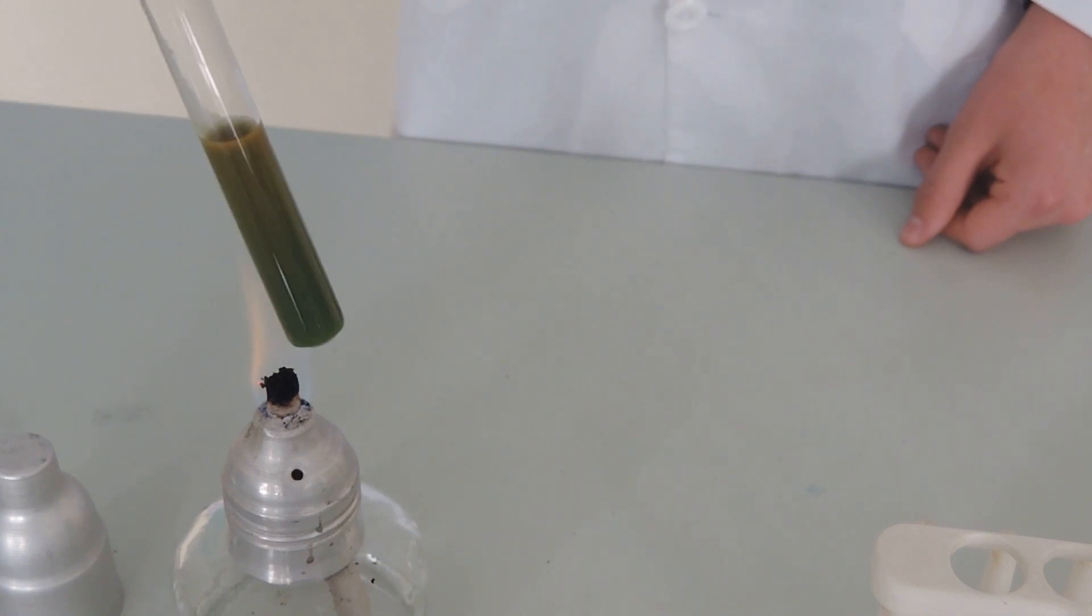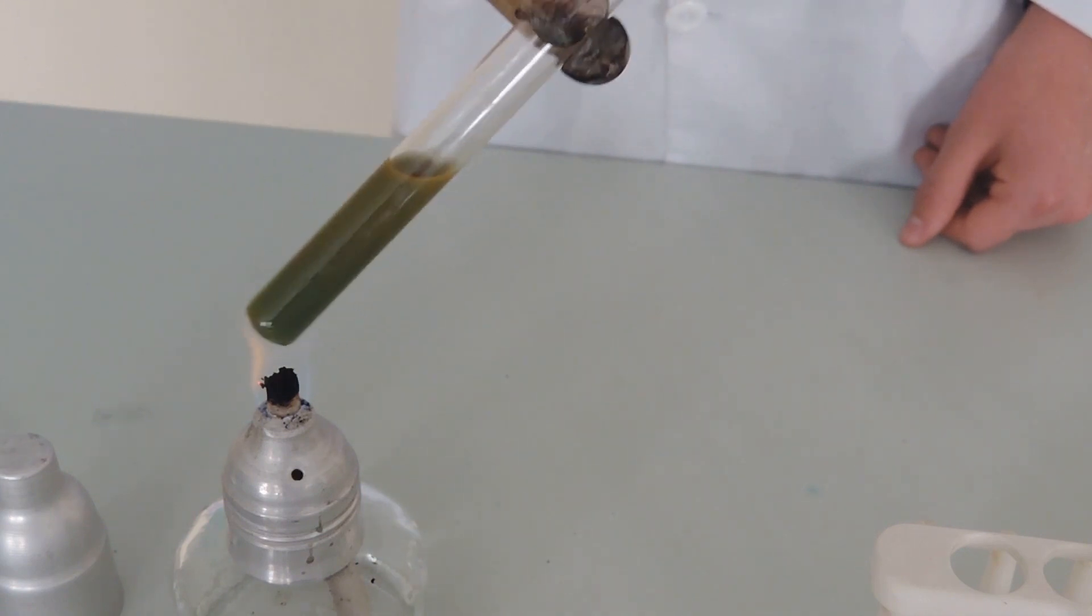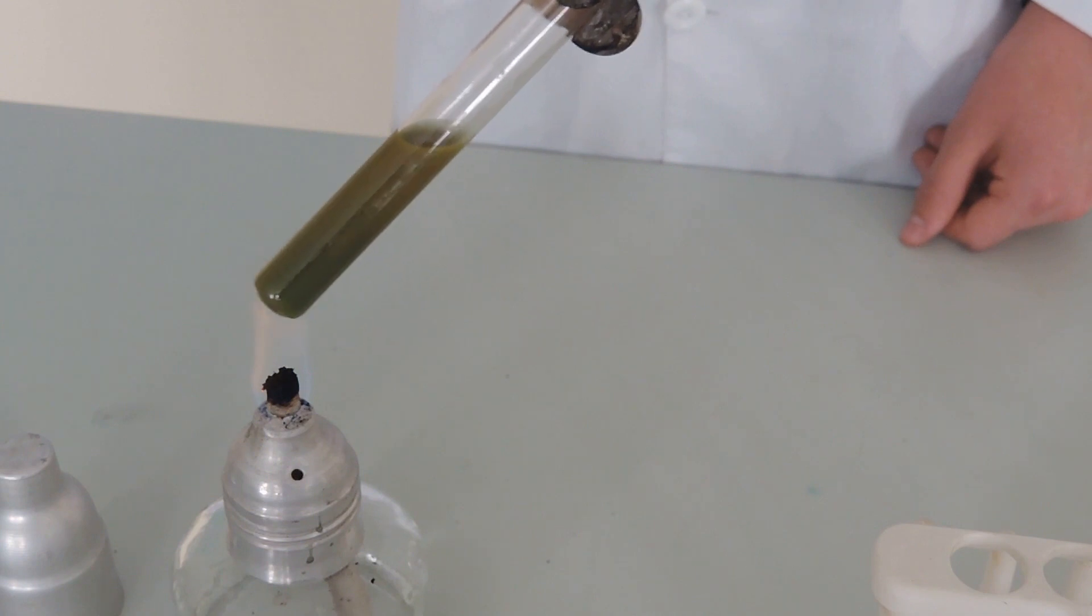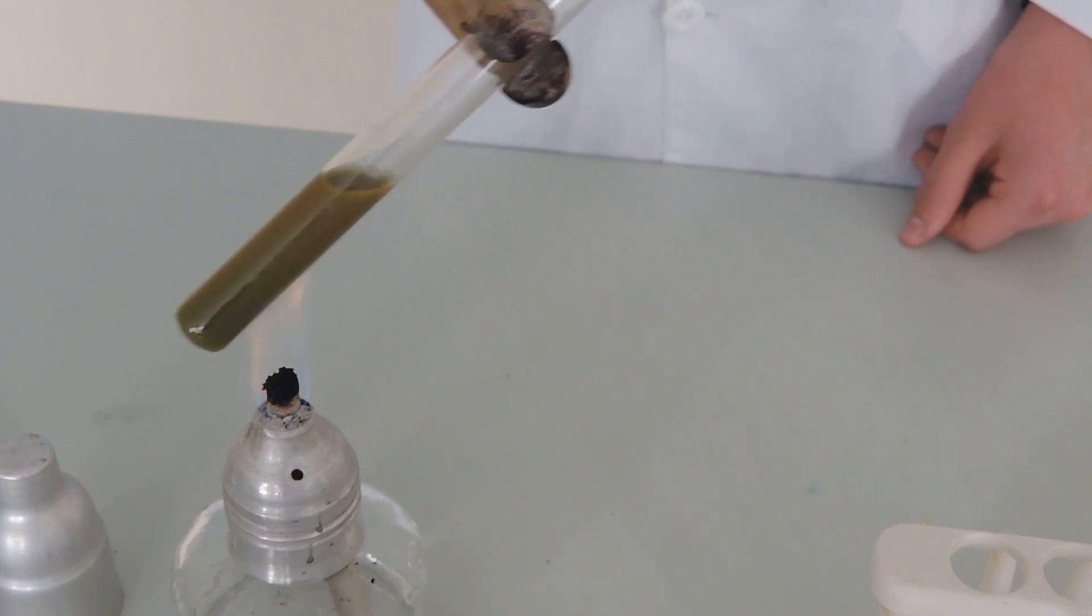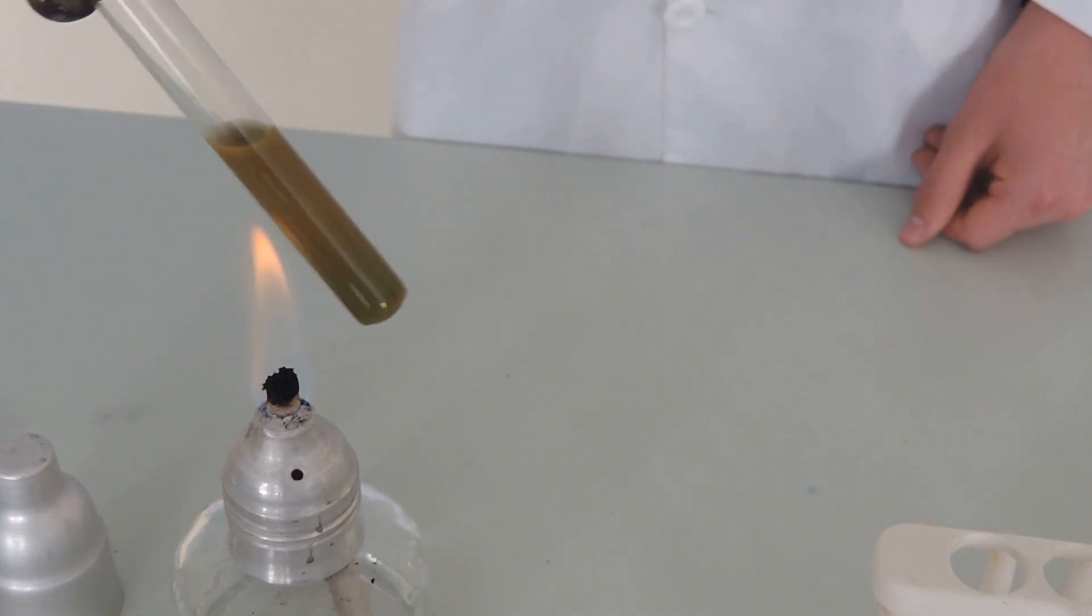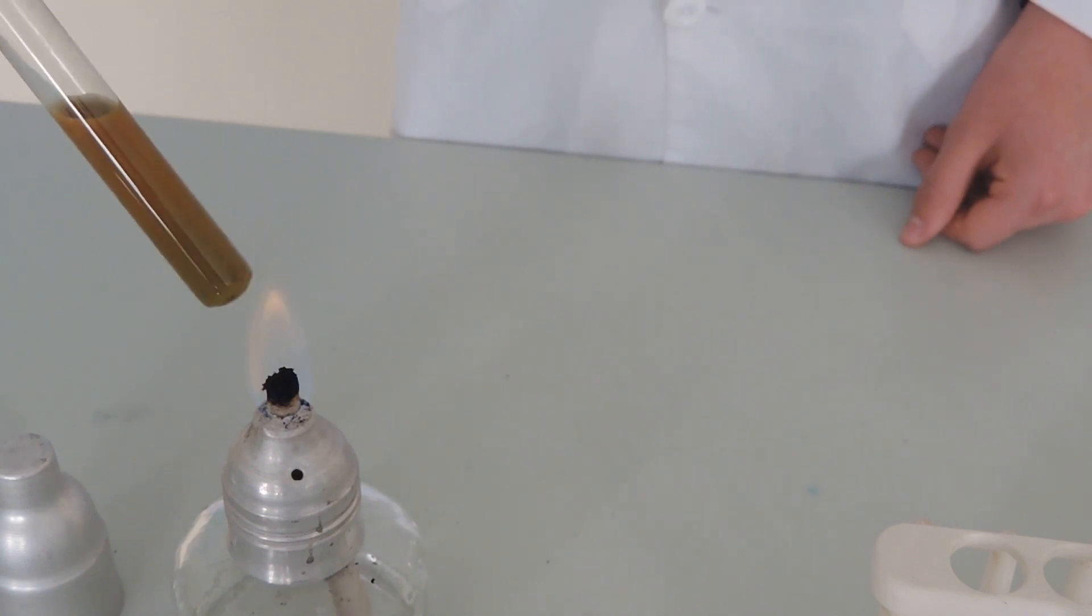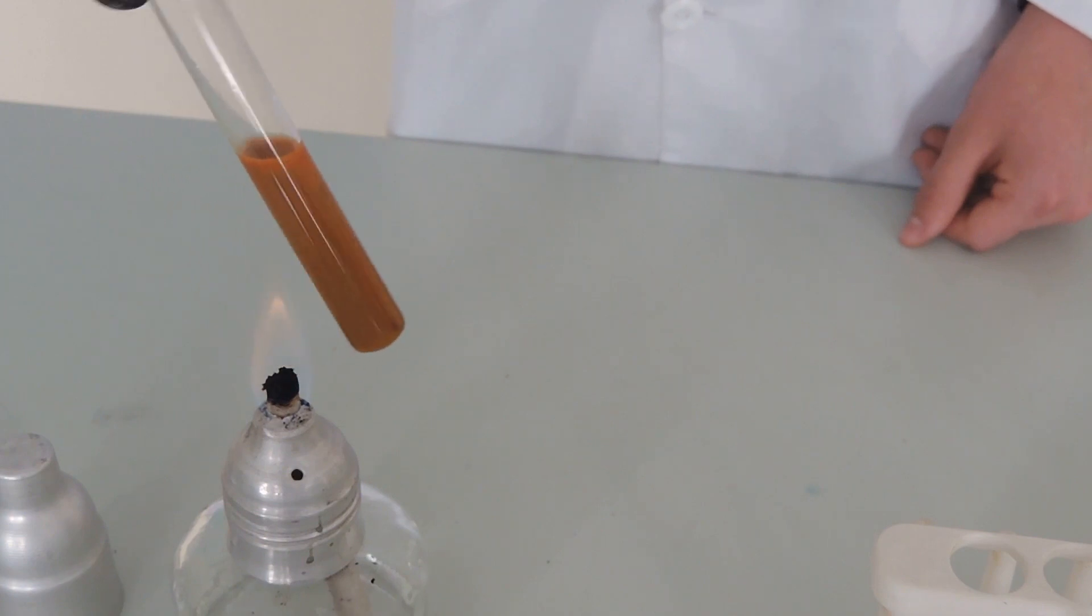At the beginning, there forms a yellow precipitate of copper-1-hydroxide, which turns to a brick precipitate of copper-1-oxide.